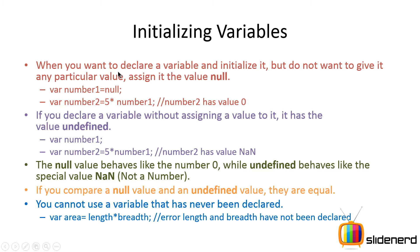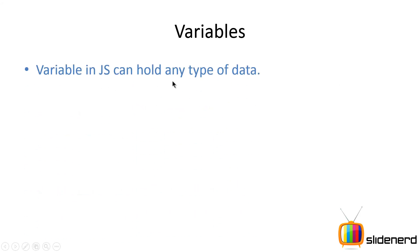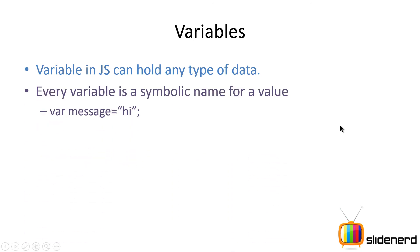We'll be looking at NaN and undefined stuff in the example in WebStorm in the same video, so stay tuned. Variables in JavaScript can hold any type of data. You can have numbers like 1, 2, 3 — say var my number is 123. You can have names like var my name is 'vivs' in double quotes. There are different types of data or different types of values that you can have, and that's what you call data types in JavaScript. For example, var message is 'hi' during initialization.